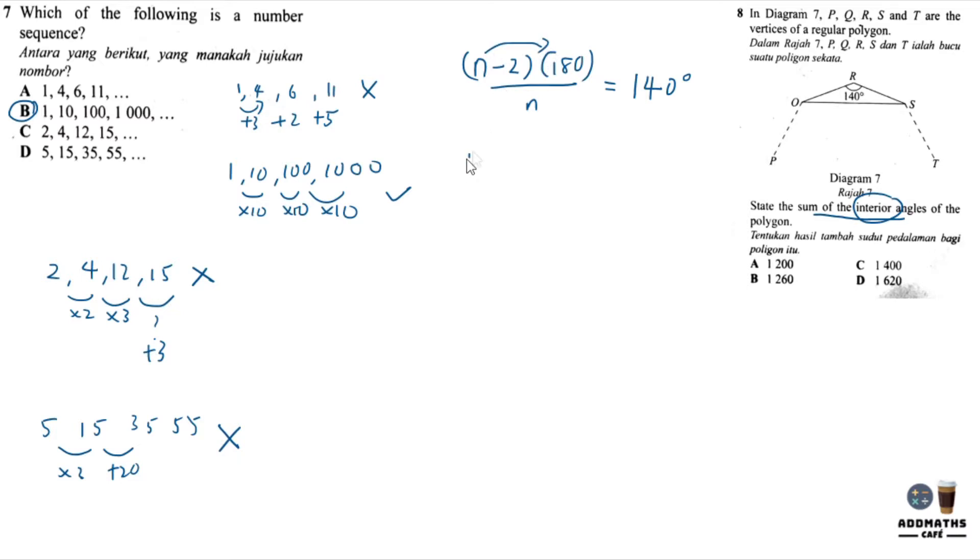We are required to find n. Let's multiply by 180n. Then 2 times 180 gives 360. Bring n to the opposite, it will be 140n. So 180n minus 140n equals 360. Bring the unknown on one side, so 40n equals 360. n equals 360 divided by 40, you get 9 sides. This regular polygon has 9 sides. To find the sum of interior, use 9 times each interior, which is 140. You get 1260 degrees. The answer is B.